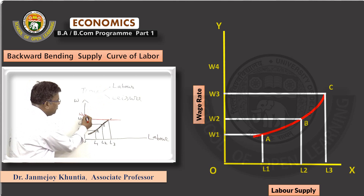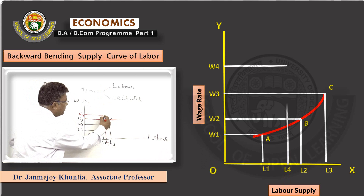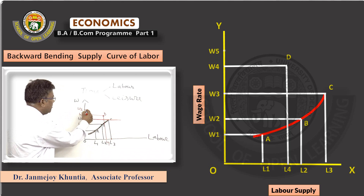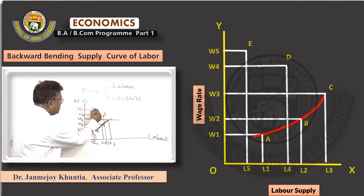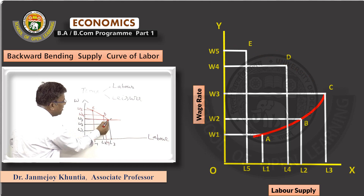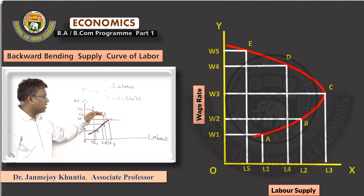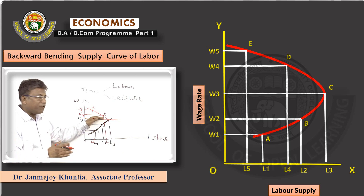At W4, labour supply is at L4 at point D, which is less than the previous labour supply at W3. A further increase in wage to W5 further reduces labour supply to L5 at point E. Look at the locus C, D, E — this gives the backward bending portion of the labour supply curve. This backward bending occurs because the income effect is dominating and the individual is preferring more leisure over labour supply, so labour supply is falling with an increase in income.